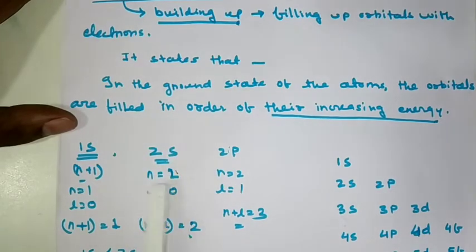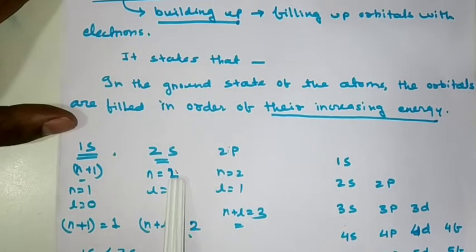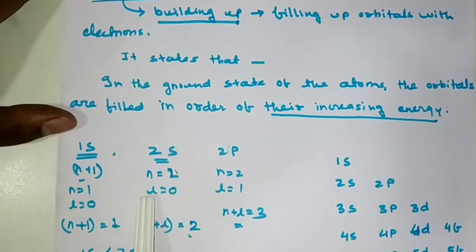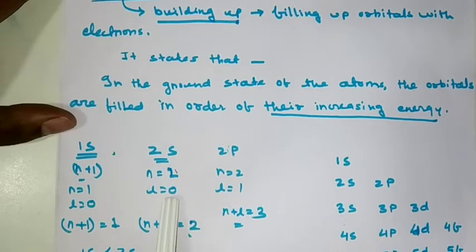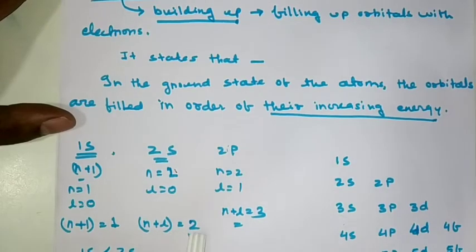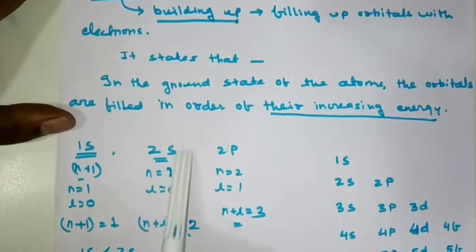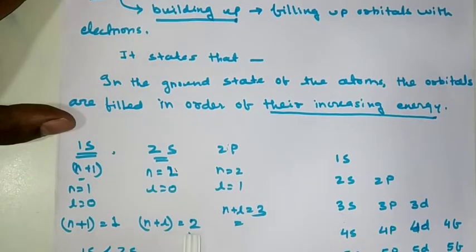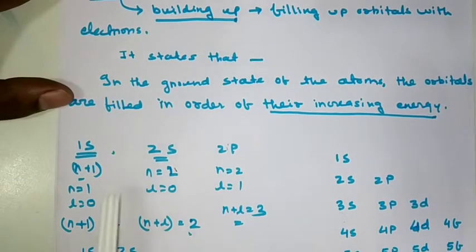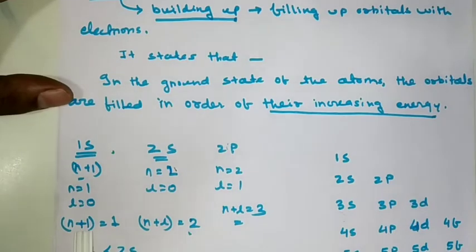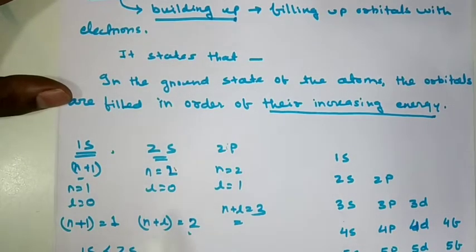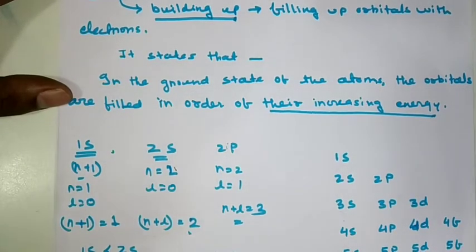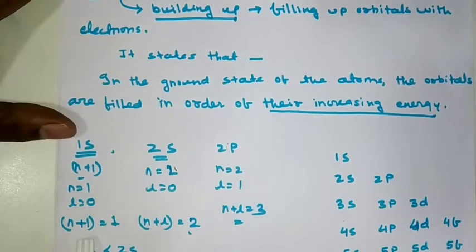In the case of the 2s orbital, N is equal to 2, and for the s orbital, the azimuthal quantum number L is equal to 0. Applying the N plus L rule, N plus L value equals 2. We can see that in the case of the 2s orbital, the N plus L value is greater than the N plus L value of the 1s orbital. So we can say the energy of the 2s orbital is higher than the 1s orbital, and therefore the 1s orbital electron fills first, then the 2s orbital.